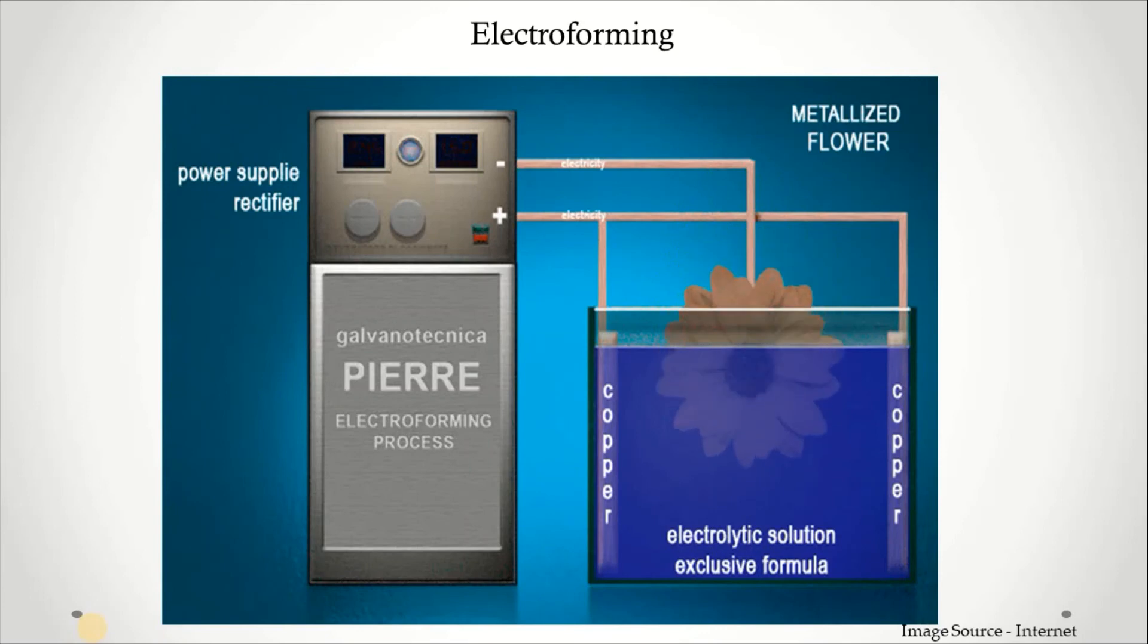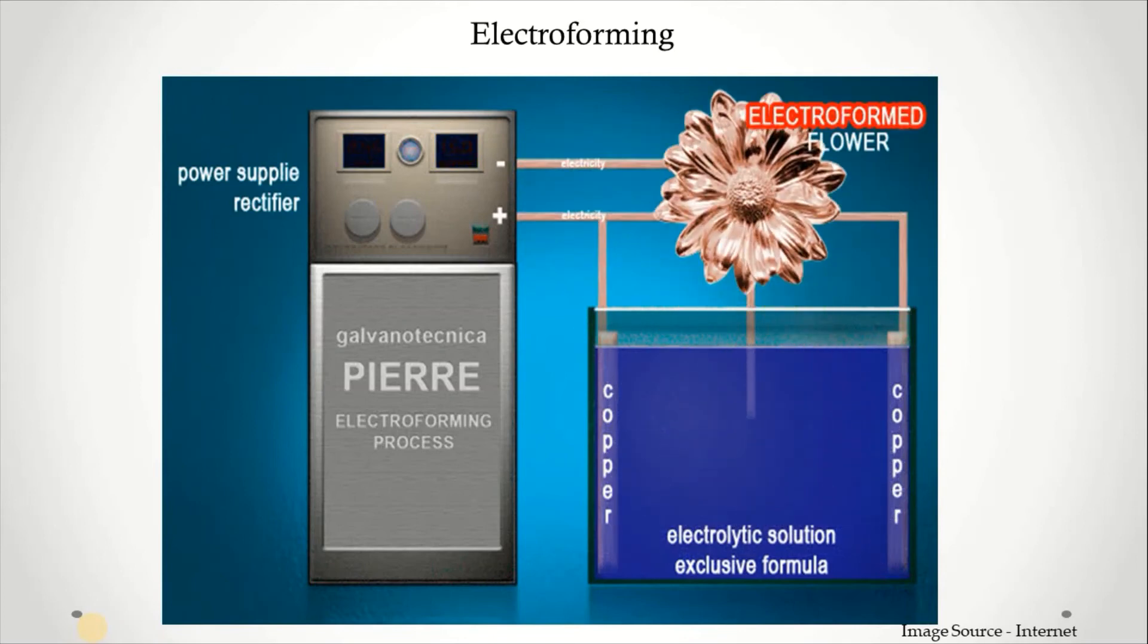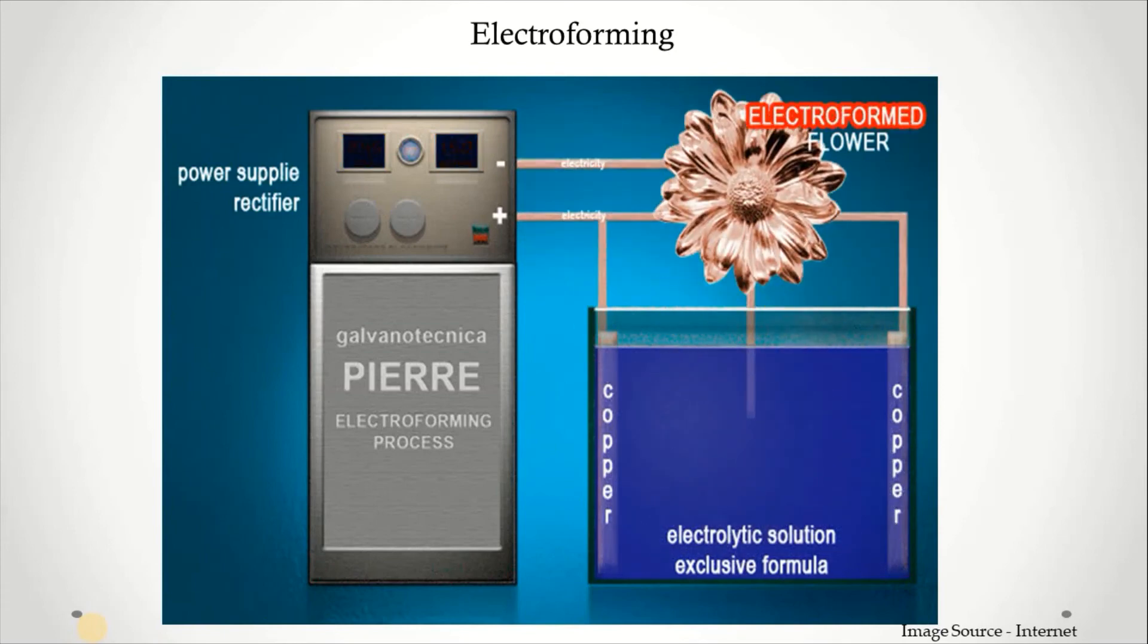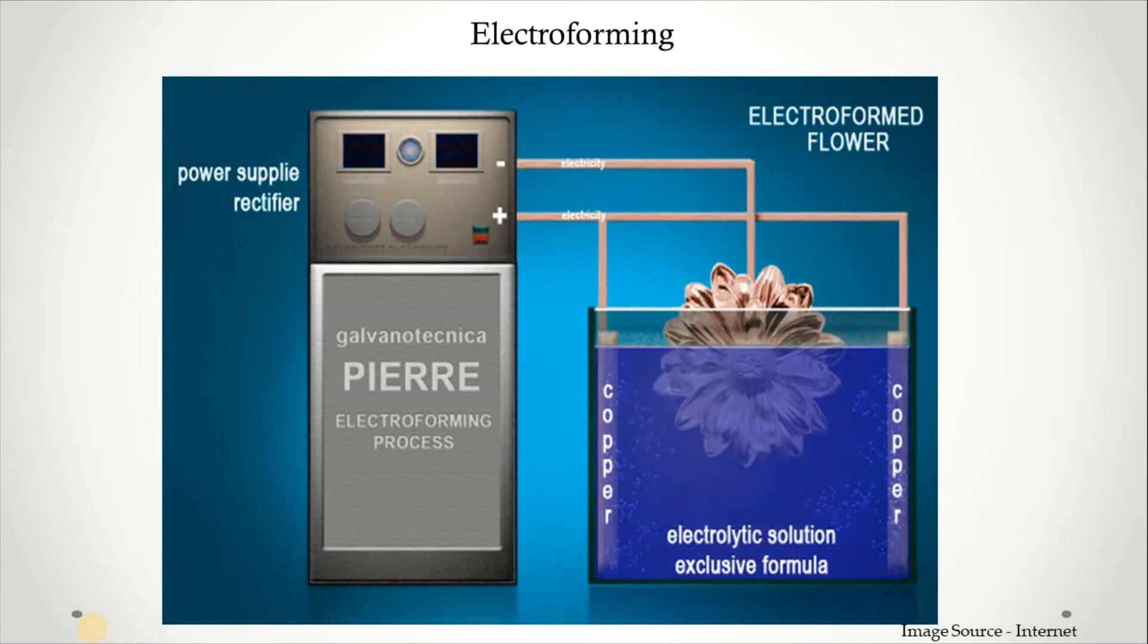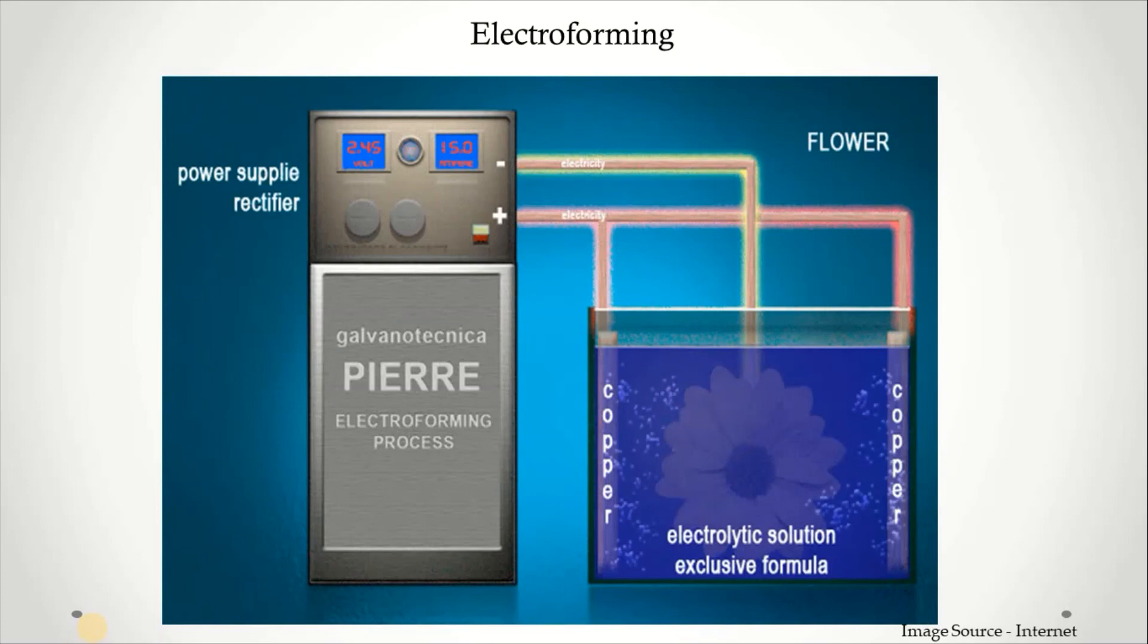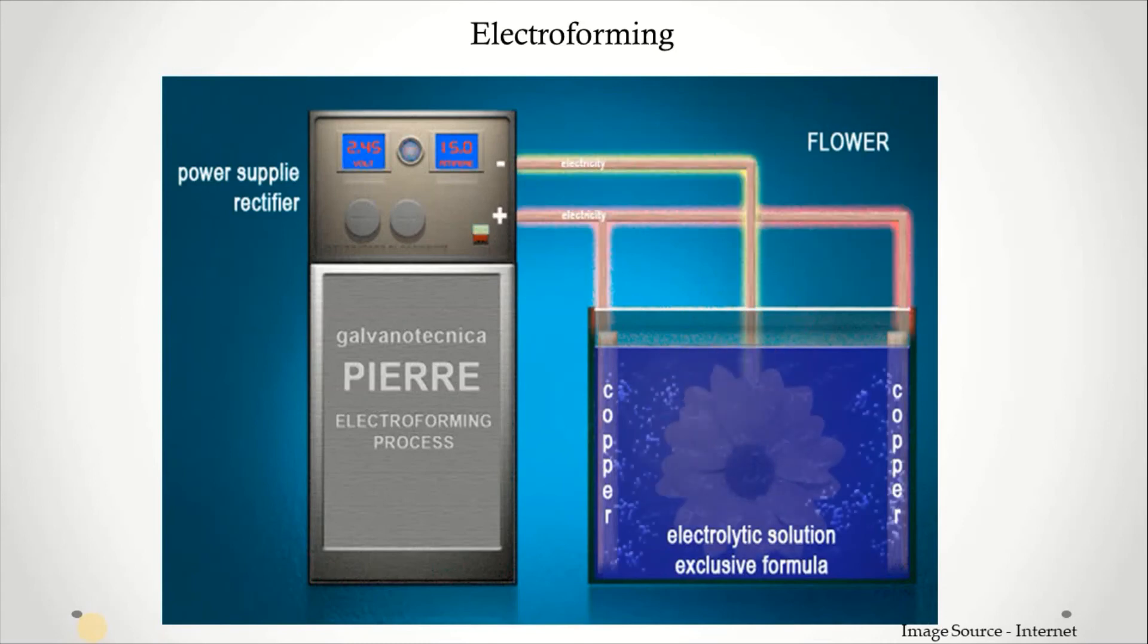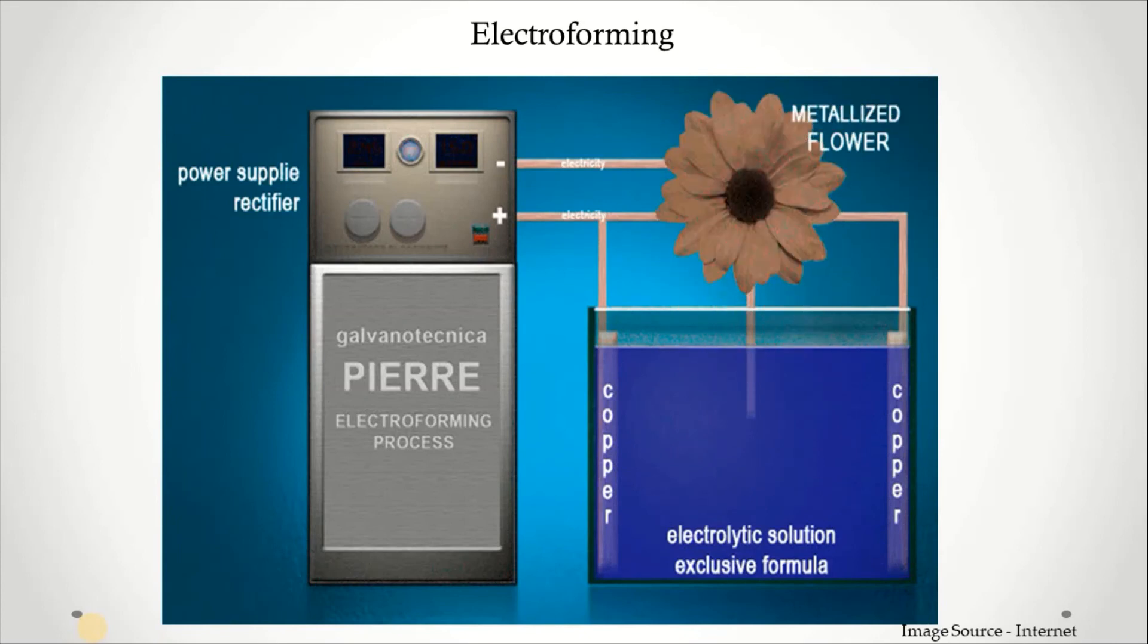Then electroforming. It is a metal forming process in which parts are fabricated through electrodeposition on a model. You can see a flower which is deposited on an electrolyte solution. When we deposit on the copper, the reaction will take place and we'll get an electroformed flower which has good surface finish. Electroforming is a way to make natural or other materials into metal jewelry components by building up layers of metal around your forms, preserving them forever. We can preserve this electroformed flower.